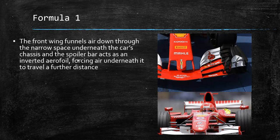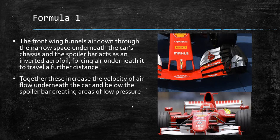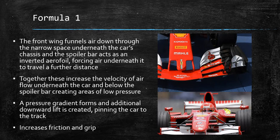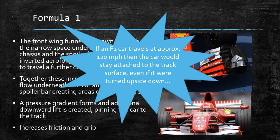In Formula One, the front wing funnels air down through the narrow space underneath the car's chassis, and the spoiler bar at the back acts as an inverted aerofoil — it forces air underneath it to travel a further distance, creating the downward force. It creates a pressure gradient between above and below the spoiler bar, which helps to pin the car to the track and also increases friction and grip. If a Formula One car travels at approximately 120 miles per hour, the car would stay attached to the track surface even if it was turned upside down, because of Bernoulli's principle.